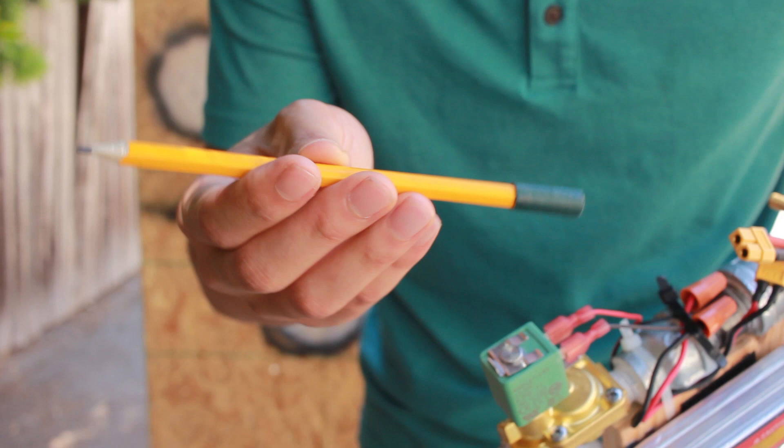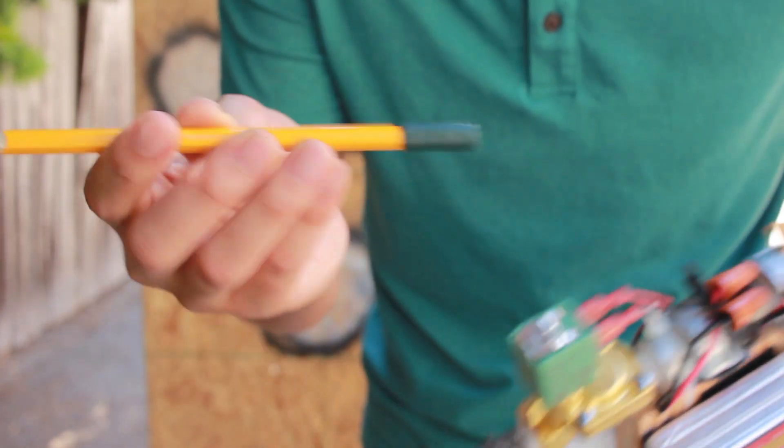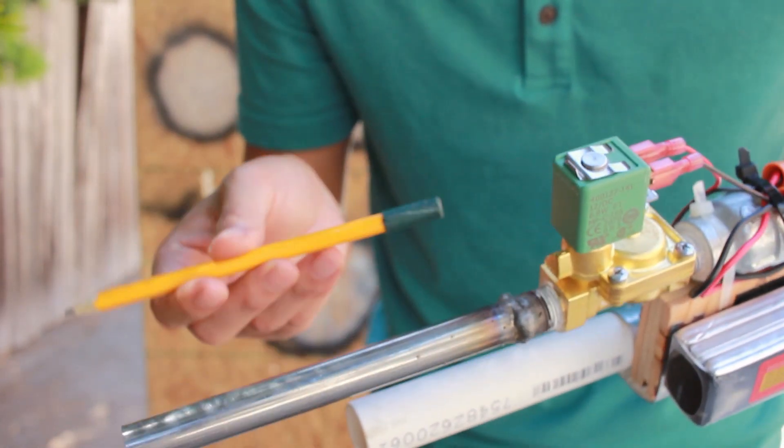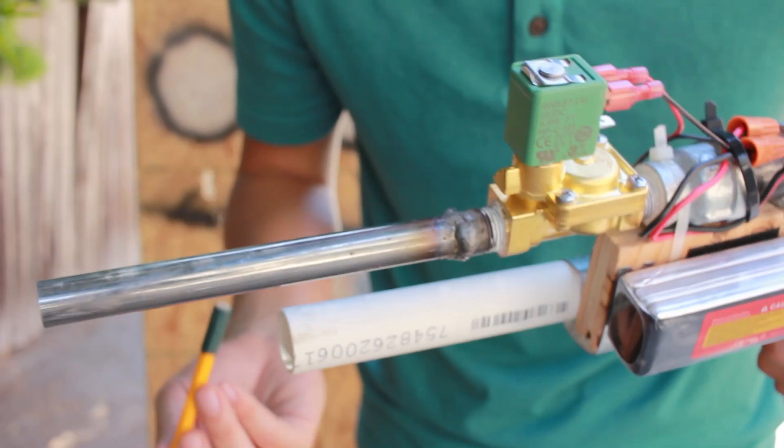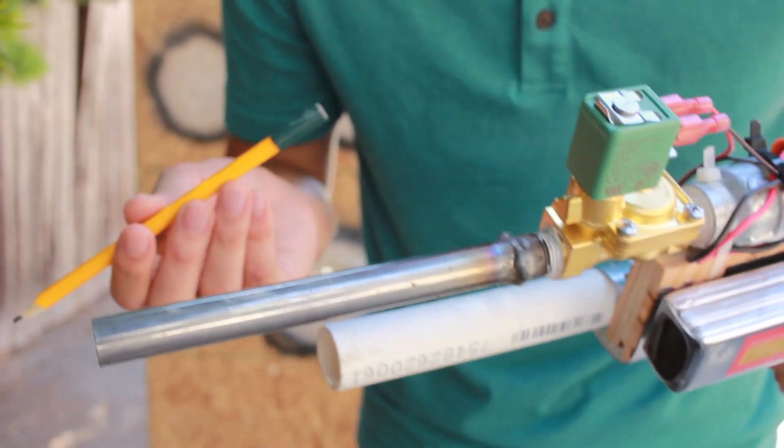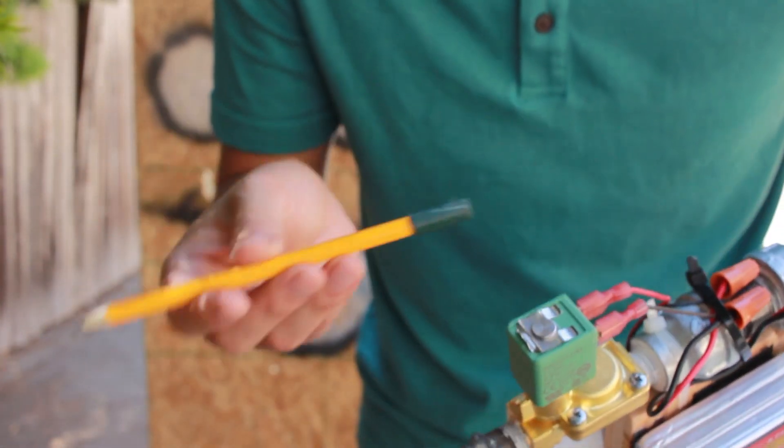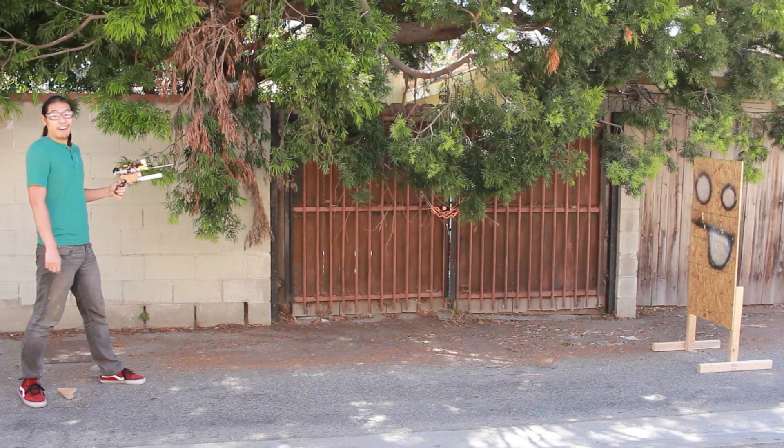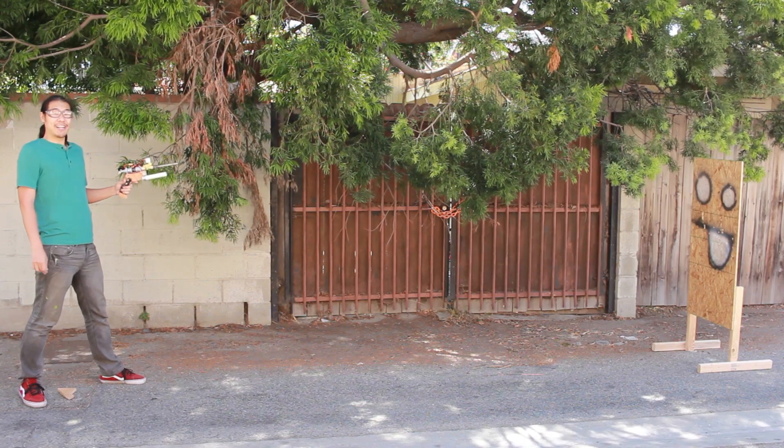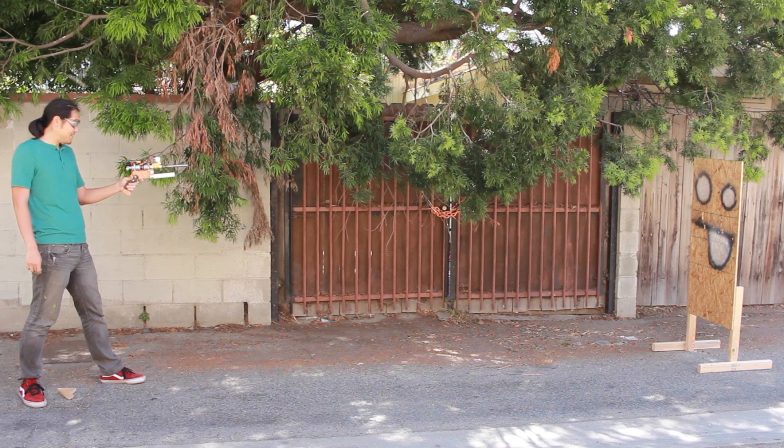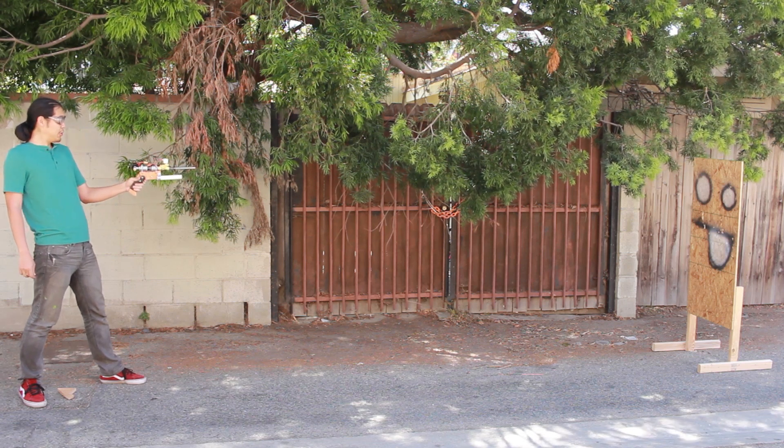For our first test, we're just going to shoot this pencil. It's got some tape at the end here so that it's a tight fit in the barrel. I'm just going to pump this up to 150 psi. I don't know exactly how well this is going to work, but I mean at 150 psi, something's going to happen. Alright, grappling gun. Shooting a pencil at 150 psi at 15 feet in three, two, one.